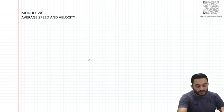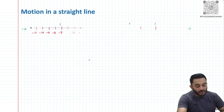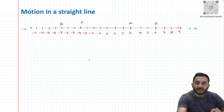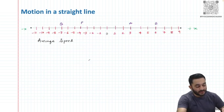Hello guys, in this module we are going to learn about average speed and velocity. When we talk about motion in a straight line, we are going to take an example where an object has traveled from A to B and then from B to A.